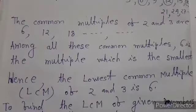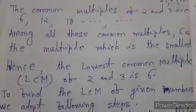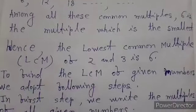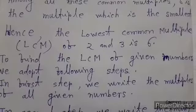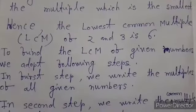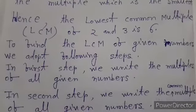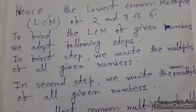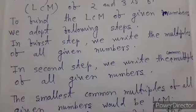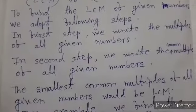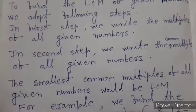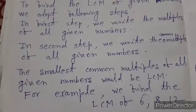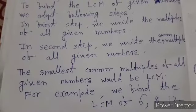To find the LCM of given numbers, we adopt the following steps. In the first step, we write the multiples of all given numbers. In the second step, we write the common multiples of all given numbers. The smallest common multiple of all given numbers would be the LCM. For example, to find the LCM of six, eight, and twelve.